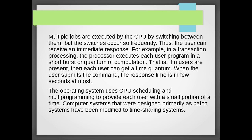If n users are present, each user gets a time quantum. When the user submits a command, the response time is in a few seconds. Multi-programming provides each user with a small portion of time. CPU scheduling is an important concept here — it determines how to provide each user with a small portion of CPU time.